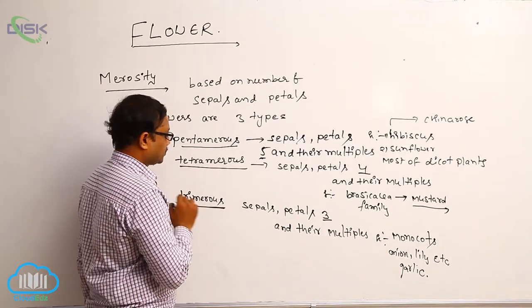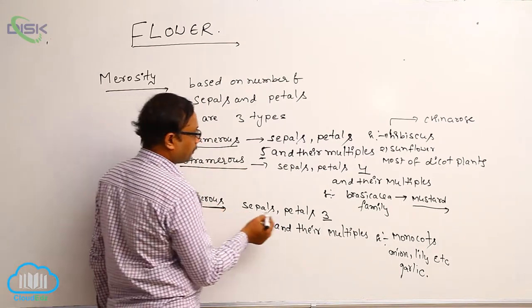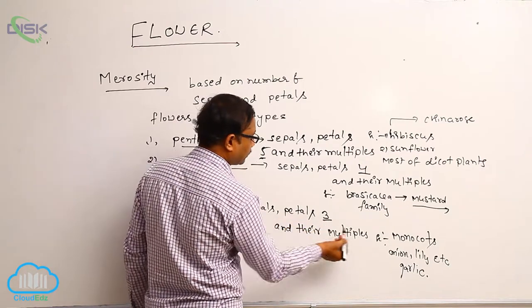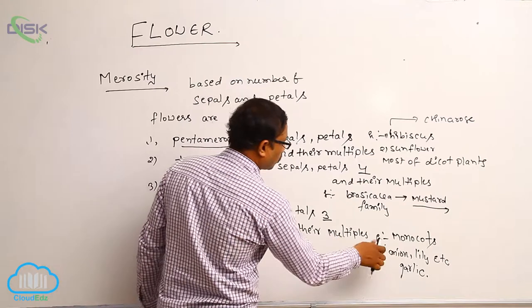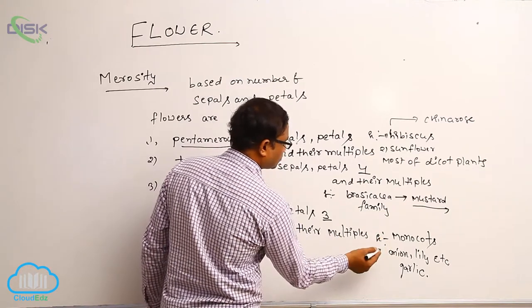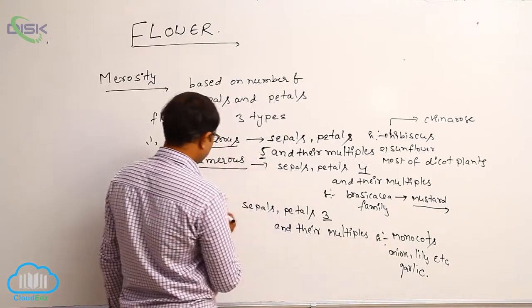After the trimeras, trimeras means sepals and petals are three and their multiples three, six, nine, just like that. All monocot plants flowers showing trimeras condition.